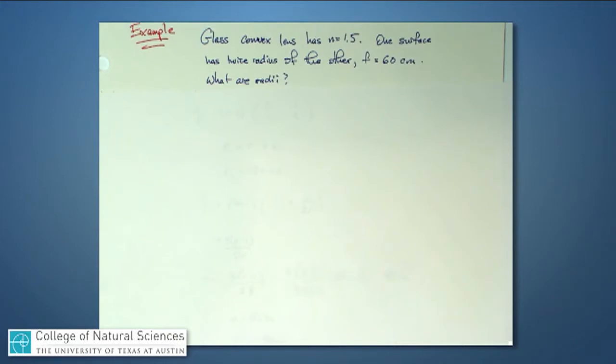I've got to find two numbers, radius number one and radius number two. Well, I don't know a whole lot, but I'm going to start with that expression that we learned about for the focal length of a lens. One over f is n minus one times one over r1 minus one over r2.